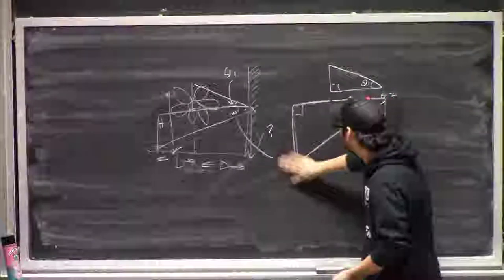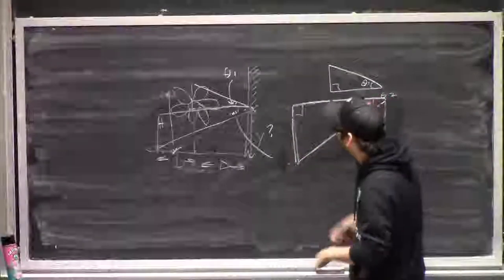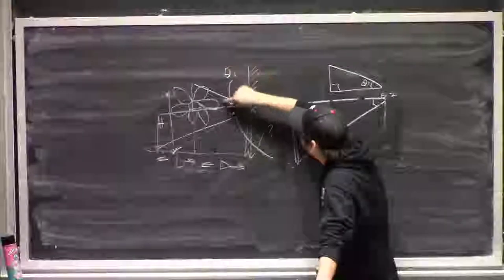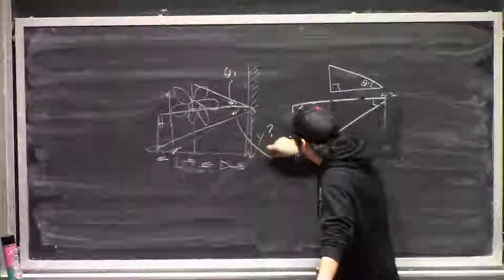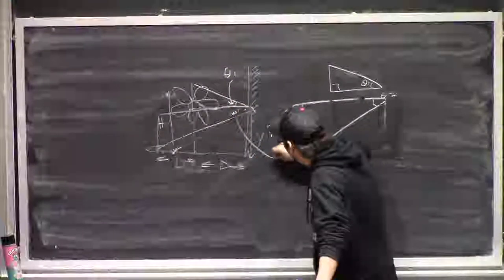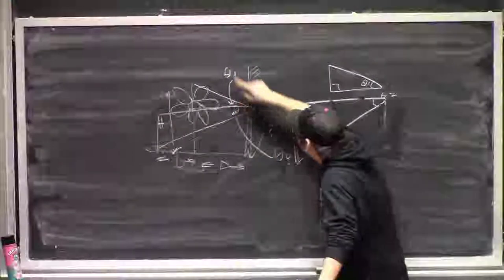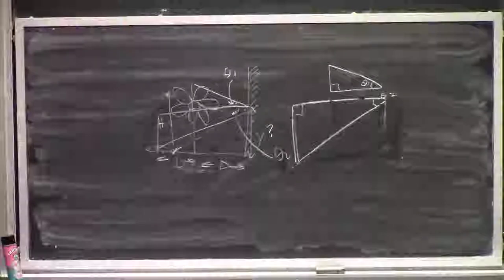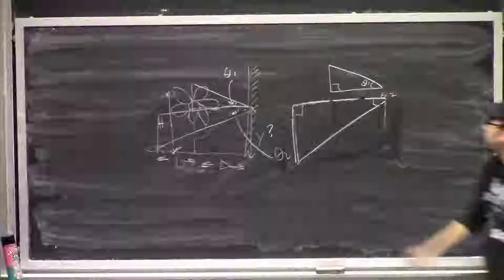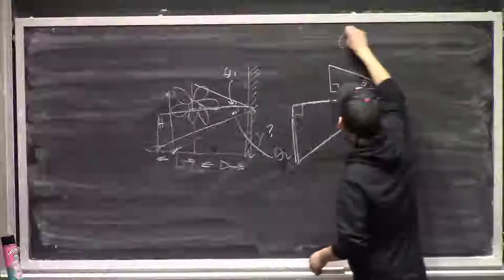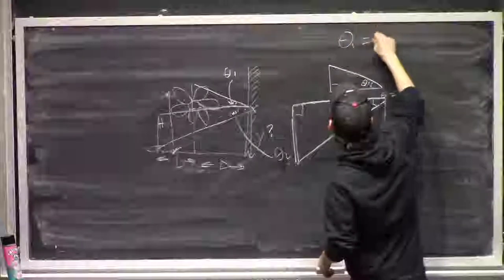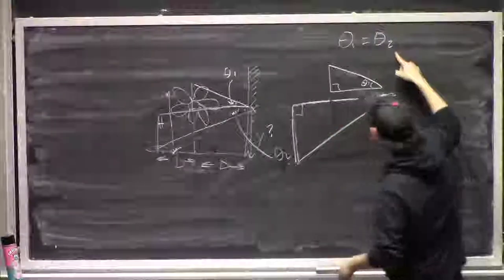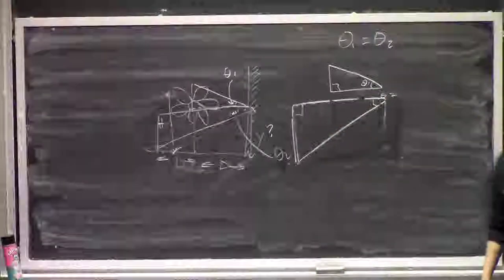Because of the law of reflection, there's some angle theta1 here and some angle theta2 here. How can I relate theta1 and theta2? They're equal to each other — theta1 is equal to theta2. So we'll use that a little bit later.